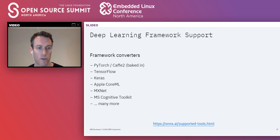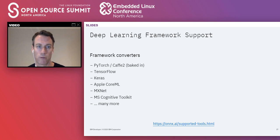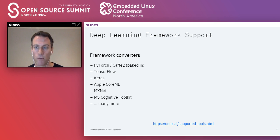Because its focus is on deep learning, ONNX has strong support within deep learning frameworks. It's baked into PyTorch and Caffe2 from version one, with strong support for TensorFlow — IBM Research played a role in creating the TensorFlow converter. It also supports Keras, Apple Core ML, MXNet, Microsoft's Cognitive Toolkit, and many more.